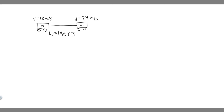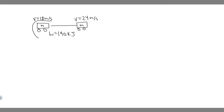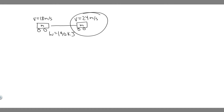In this problem, we're told the energy required to increase the speed of a certain car from 18 meters per second to 24 meters per second is 190 kilojoules. Part A: what is the mass of the car? And Part B: at what speed is the car's kinetic energy equal to 190 kilojoules? So as usual, you want to draw what's going on. We have this car going 18 meters per second, and it's going to take 190 kilojoules to get it to go 24 meters per second.